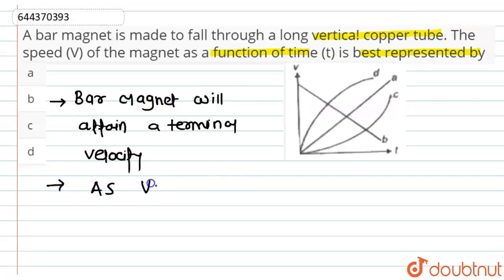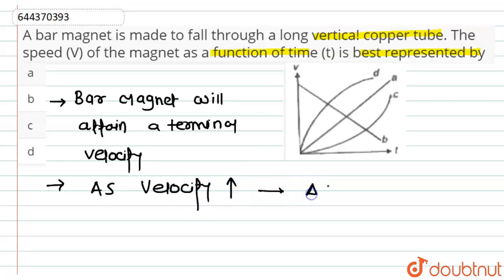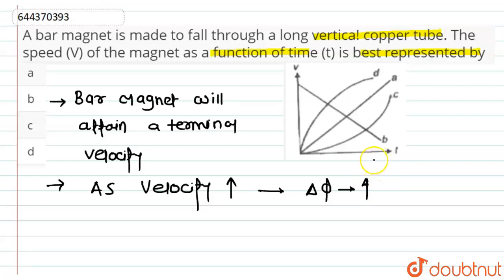As velocity increases, the value of ΔΦ — that is, change of flux — will also increase, and according to Lenz's law, the force acting on it will start decreasing.